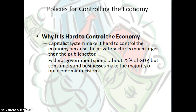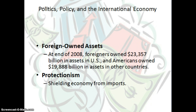There are a lot of factors — you can't control every component of the private sector. The federal government spends about 25% of GDP, but consumers and businesses make the majority of economic decisions. So the question is: do the choices of consumers and businesses have a greater impact on the economy than public policy? Can the government actually control the economy? You also have to consider foreign-owned assets and how much foreigners own of the U.S. economy, as well as protectionism — shielding our economy from imports. When we import a lot from other countries, we can be economically controlled by them.